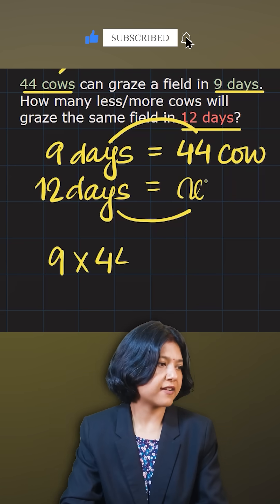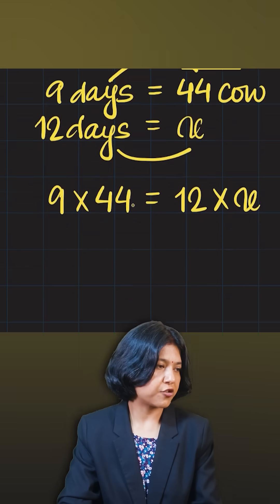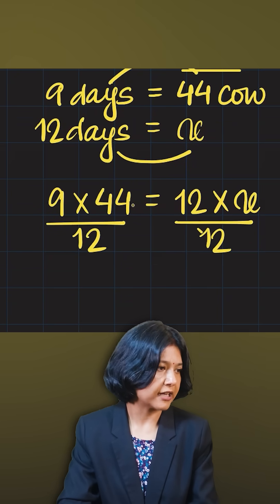Nine times 44, whatever the value is, you should be getting the same value by multiplying 12 with x. Again, now we'll get rid of 12 or we'll just divide both sides by 12. If I'm doing that, it can be super fast.